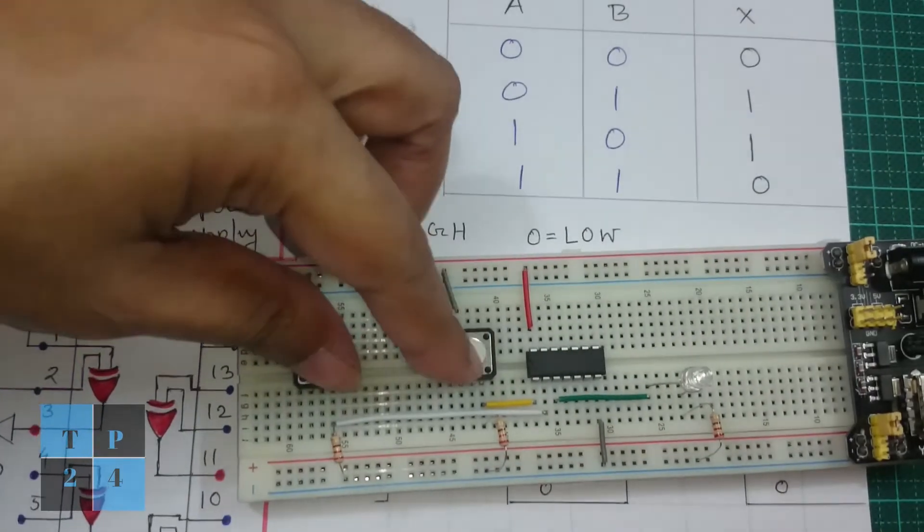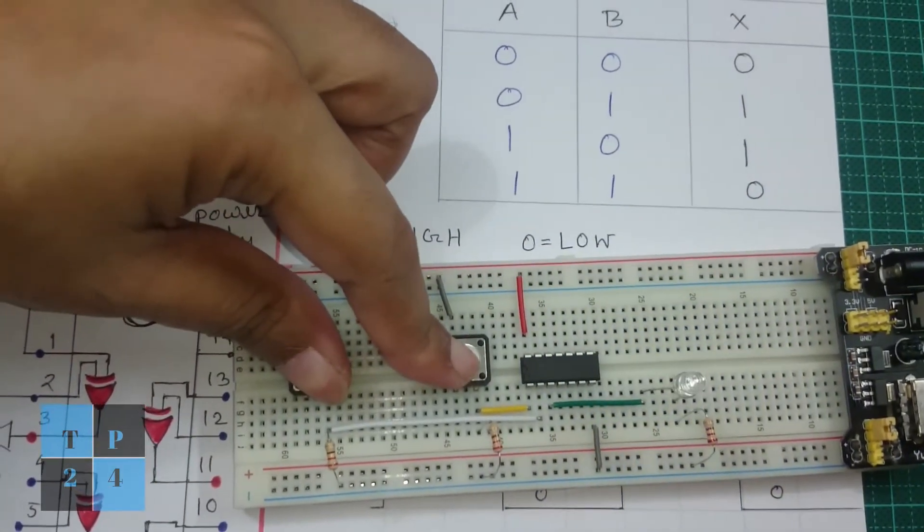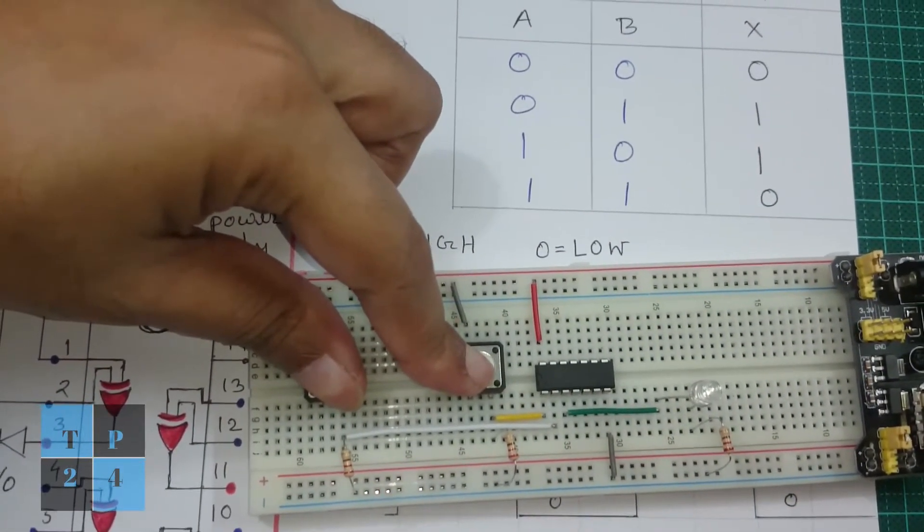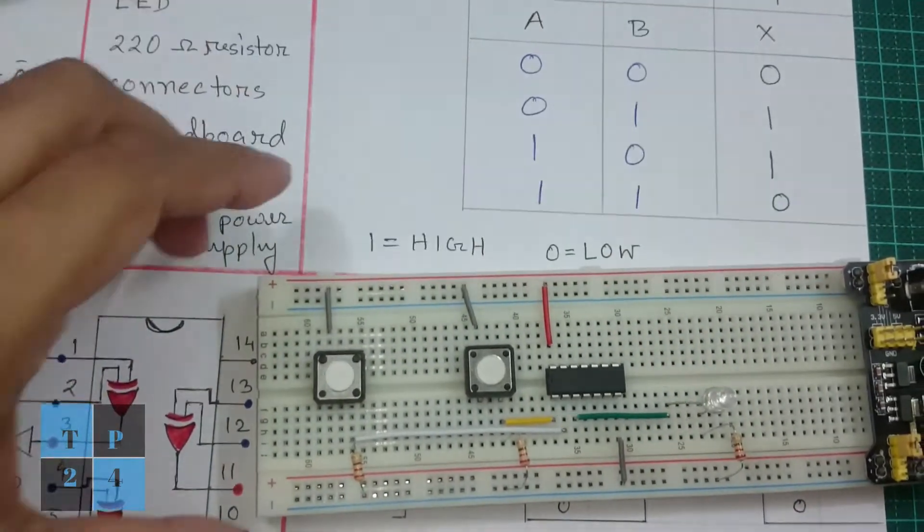Now if the input A is 1 and input B is 1 the output should be 0 so if I press both buttons it is again off so it proves the truth table.